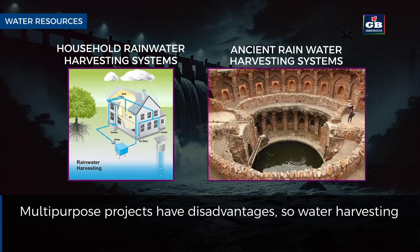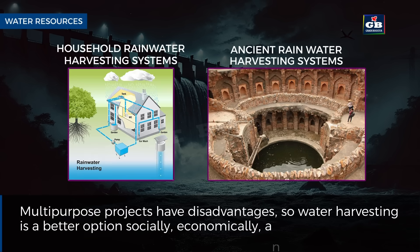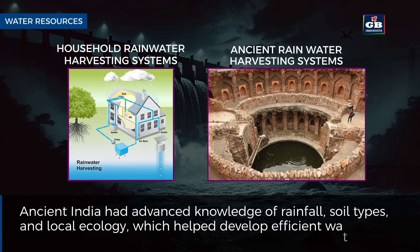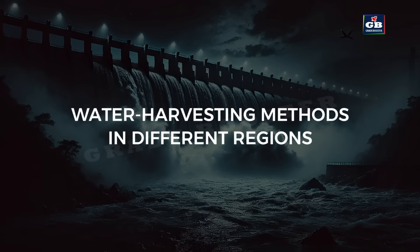Since multipurpose projects have disadvantages, water harvesting is a better option — socially, economically and environmentally. Ancient India had advanced knowledge of rainfall, soil types and local ecology, which helped develop efficient water harvesting systems.